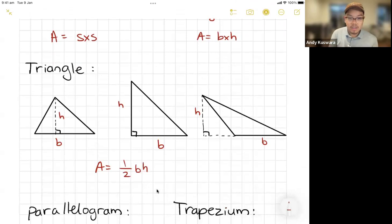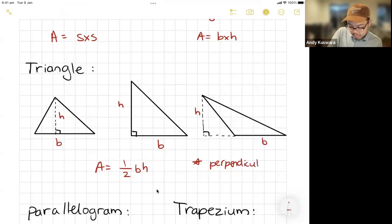Okay. Remember triangle has a half and make sure we are looking for the perpendicular height. Okay. I'll make a little note here. Must be the perpendicular height. Okay. That means you can see that little right angle.